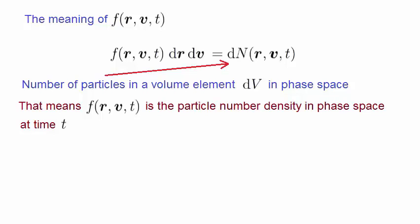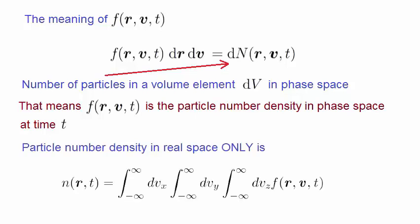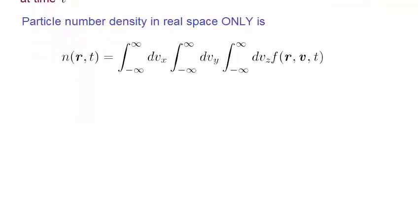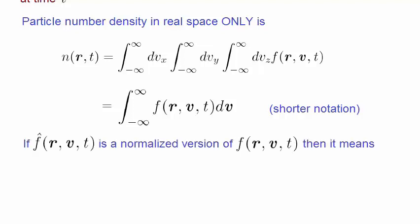But, say we only want the particle number density in real space. Then we carry out the following integral, which essentially eliminates the velocity component. We can write this in shorter notation. We can also write the distribution function with the circumflex symbol on top. Or, we can just say f-hat for short.